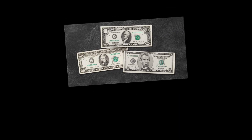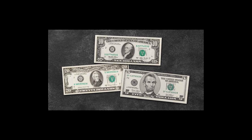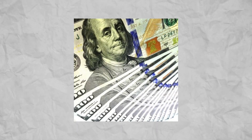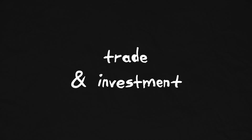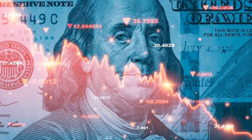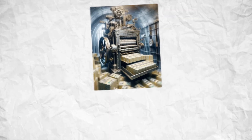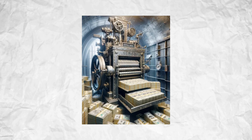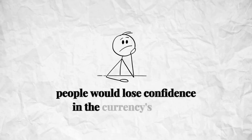This meant that you could theoretically exchange your paper money for a fixed amount of gold at any time. It provided a stable and predictable monetary environment, which was important for trade and investment. The gold standard limited the amount of money governments could print, which helped control inflation and maintain trust in the currency, reducing the risk of currency devaluation. If a country started printing too much money without enough gold to back it, people would lose confidence in the currency's value.